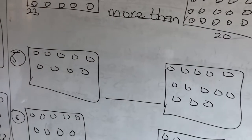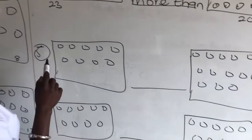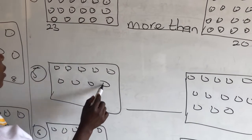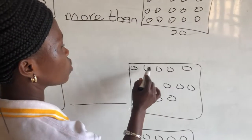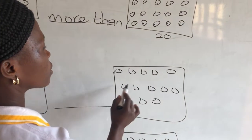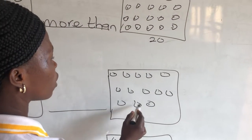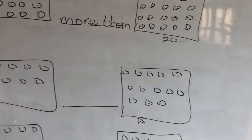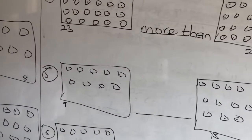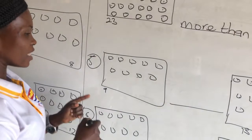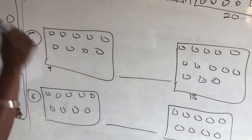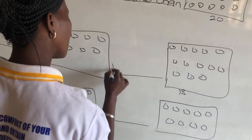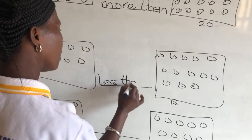The next one. Let's count the number of members: 1, 2, 3, 4, 5, 6, 7, 8, 9. We have 9 and 13. As I said, read from your left side. So 9 and 13 — 9 is less than 13. You write: less than.